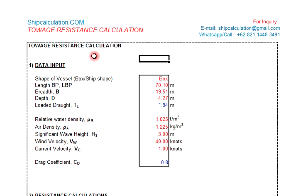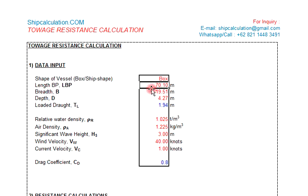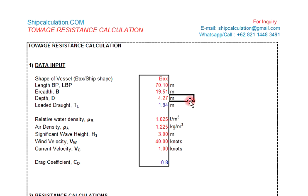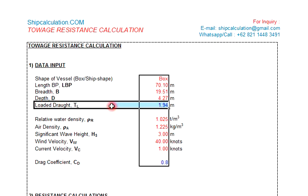The storage resistance calculation is for the phasor. This is a sample only, using a barge where the length is 70.10 meters, beam is 19.51 meters, depth is 4.27 meters, and draft is 1.94 meters.